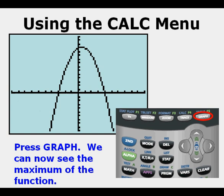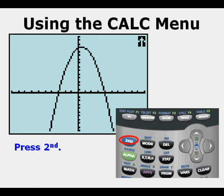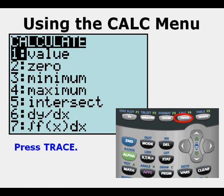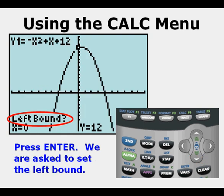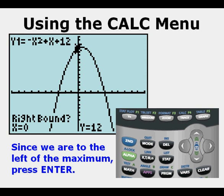Now we'll go to find that maximum value. Press second. Press trace. Scroll down to option four, maximum. Press enter. The calculator is asking us to set the left bound. Since we are already to the left of the maximum, we can press enter here. Now we're being asked to set the right bound.